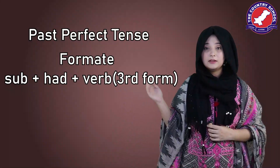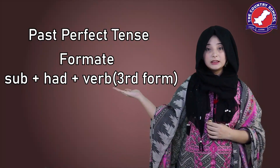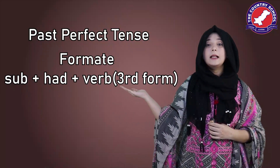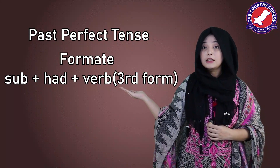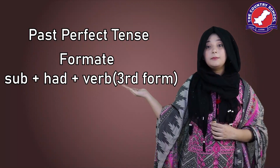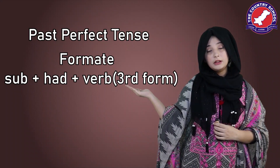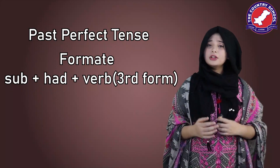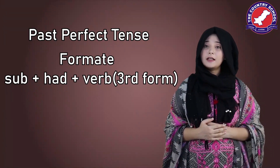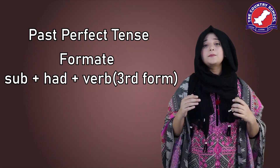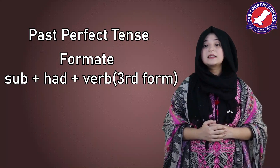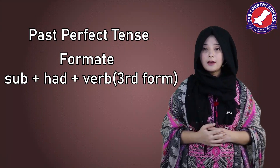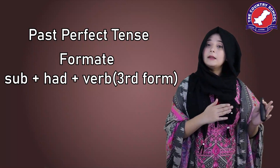Now let's see the format for past perfect tense: subject plus helping verb 'had' (H-A-D) plus the third form of the verb. Now the question is: when do we use past perfect tense? The past perfect tense is used to describe a sequence of actions that took place in the past.